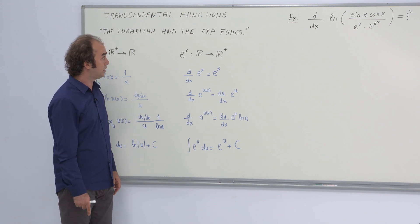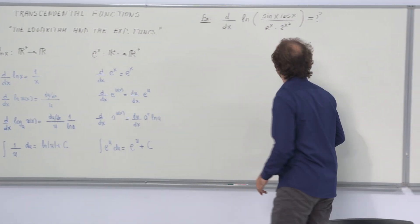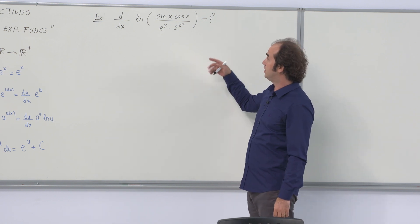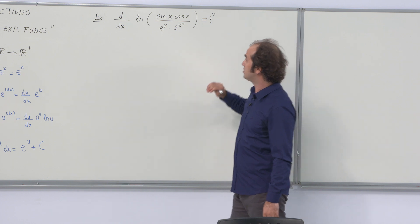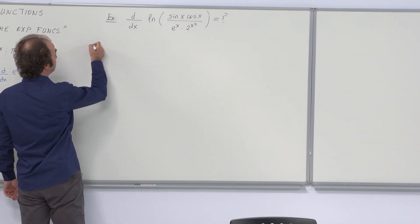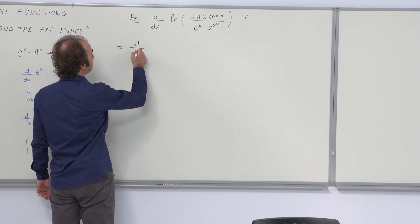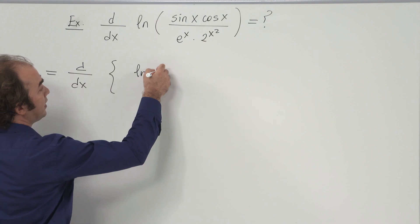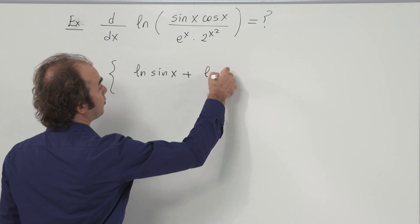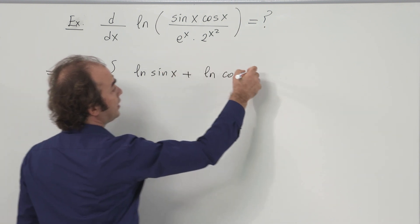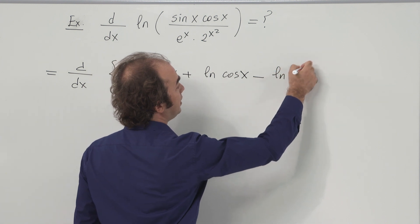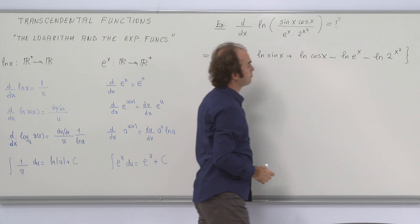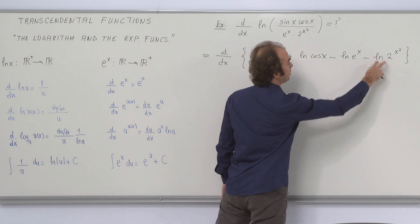I'm going to start now with an example regarding the derivative of the logarithm function. Before differentiating directly with the formulation u' over u, I'm going to simplify it first using the properties of the logarithm function: ln(sin x) plus ln(cos x), minus ln(e^x), minus ln(2x²).